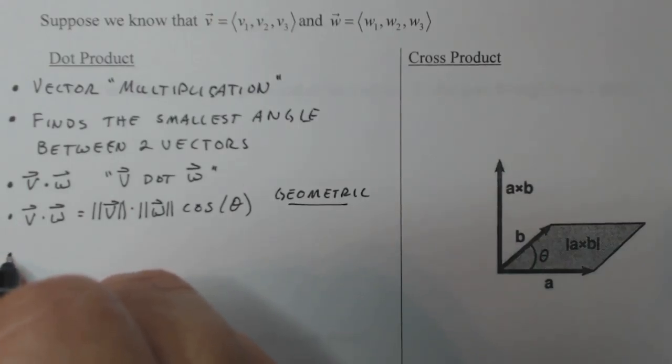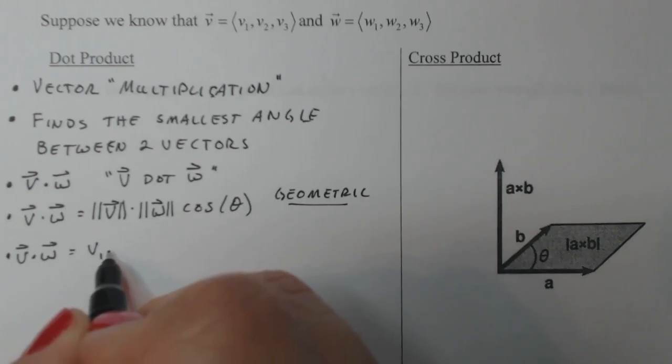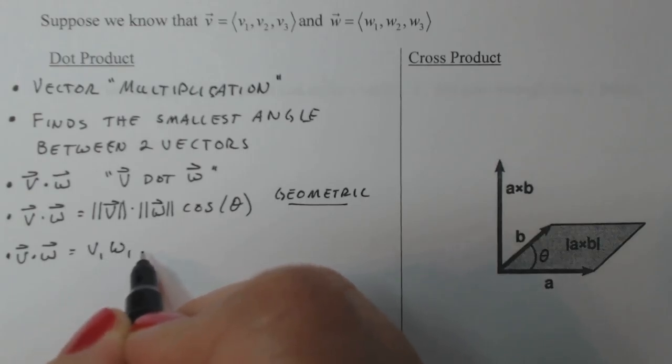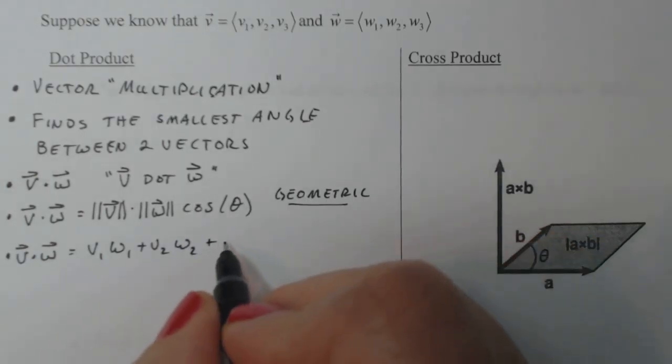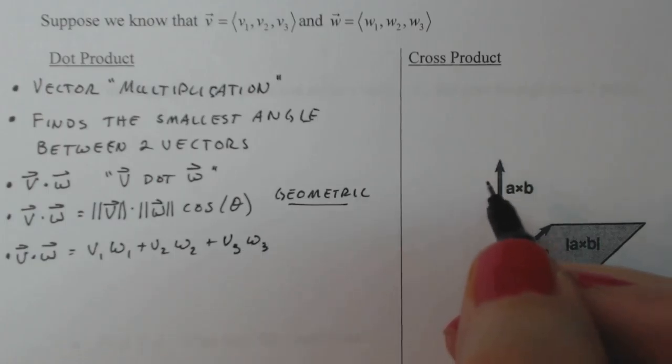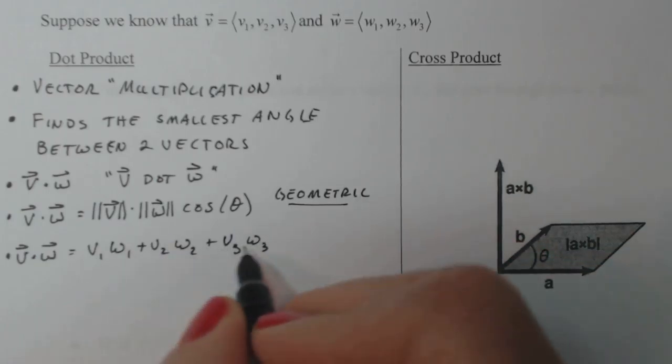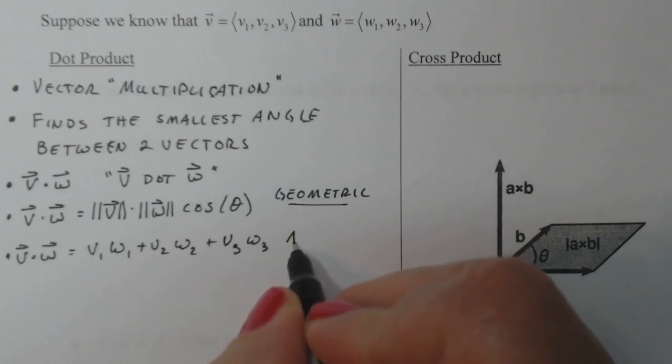The second version is an algebraic version. V dot W equals V1W1, so I multiply the I components, plus V2W2 multiply the J components, plus V3W3 multiply the K components and I add them up. This is the algebraic version.